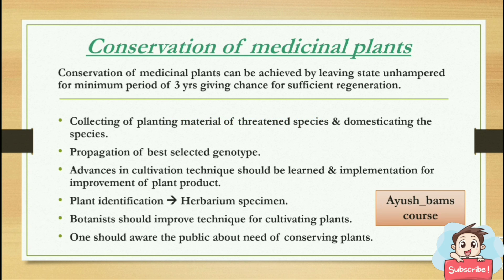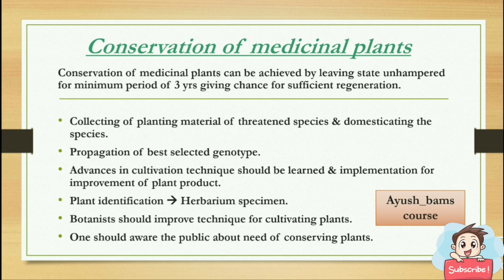Conservation of medicinal plants can be achieved by leaving the land unhampered for a minimum period of 3 years, giving chance for sufficient regeneration — we shouldn't touch the land for 3 years so that it can grow naturally and regenerate itself. Collecting plant material of threatened species and domesticating the species, propagation of best selected genotype, and advances in cultivation technique should be learned and implemented for improvement of plant products.